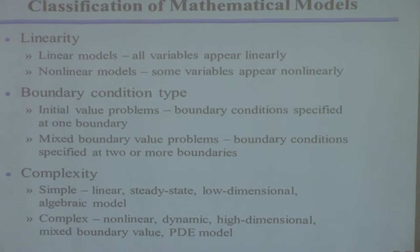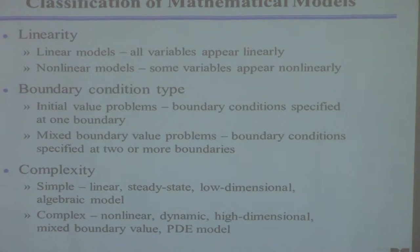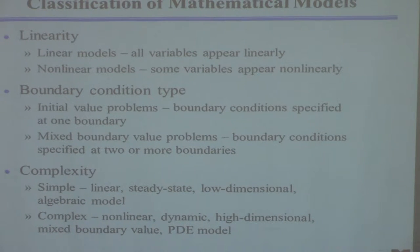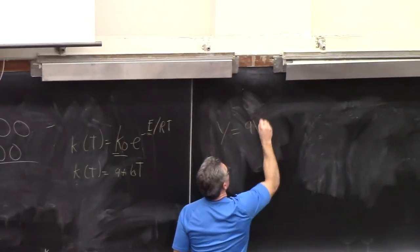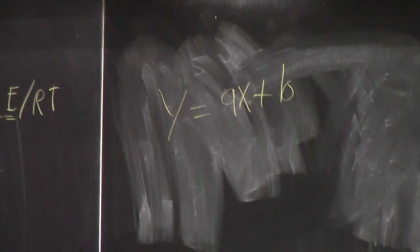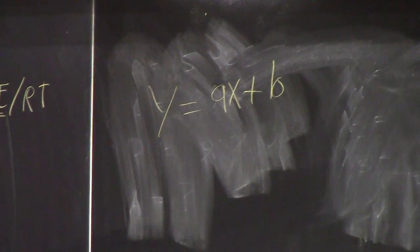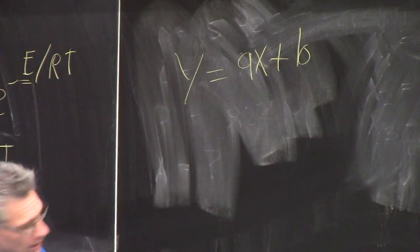In terms of complexity, what you'd want is the first case: the system is linear, time-independent — which means steady state — low dimensional. How about a single equation? How about it being just an algebraic equation, not a differential one? That would be a trivial case — like something you get in third grade. Solve that equation for x, where A and B are constants. I'm hoping you find that uniquely unchallenging.